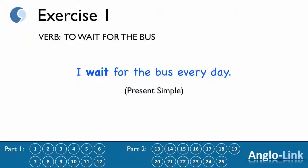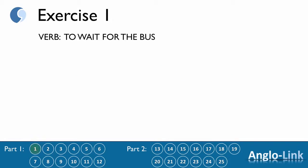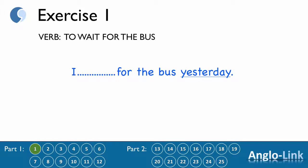In the next exercises, I'm going to change the time marker, and you need to give me the correct tense to go with that time marker. Number 1: 'I ___ for the bus yesterday.' Answer: 'I waited for the bus yesterday.' Past simple.